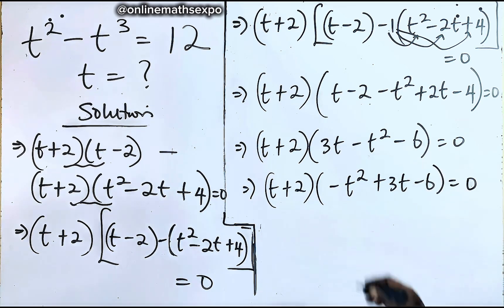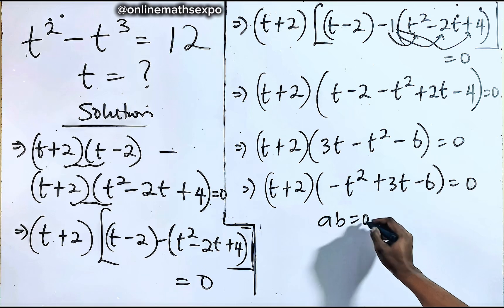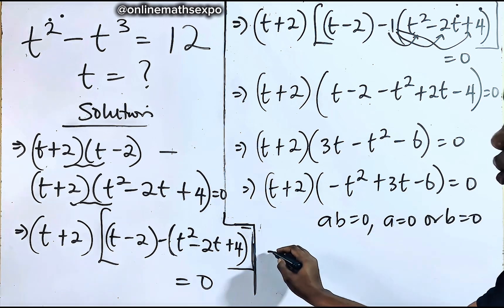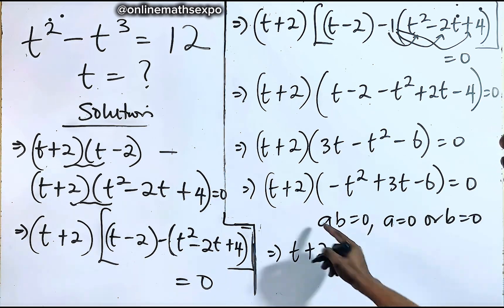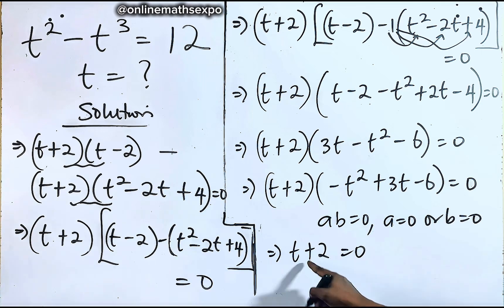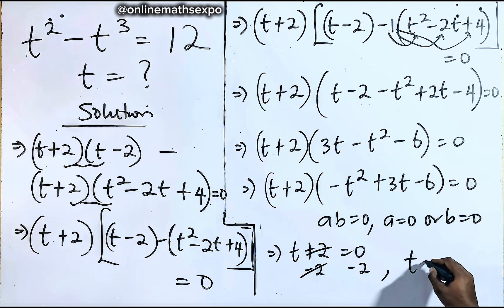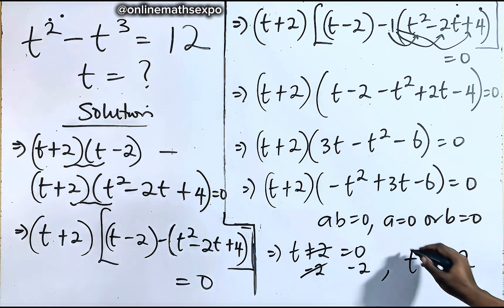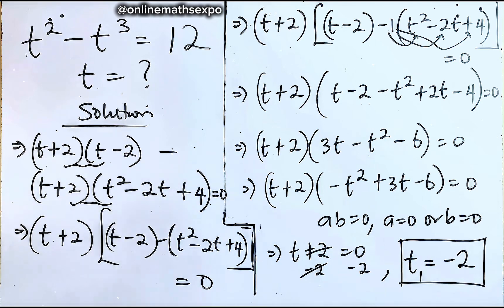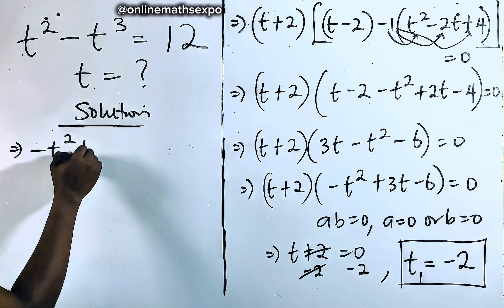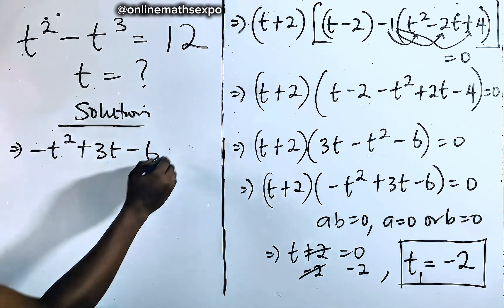So we have (t + 2)(negative t squared + 3t − 6) equals 0. Remember: if a times b equals 0, then either a equals 0 or b equals 0. Applying this, t + 2 equals 0, so subtracting 2 from both sides gives t equals negative 2. This is the first value of t.